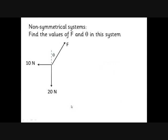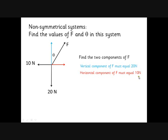Okay, it gets a little bit more complicated if the system is not symmetrical. If you're looking for this force F now, the best way to do this is to find the two components of F. So F must have a vertical component and a horizontal component. Here's the vertical component, how big is that? Well, it's going to be equal to the downwards force. Here's the horizontal component, must be equal to the force going to the left. So the vertical component of F is 20, the horizontal component of F is 10.